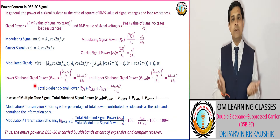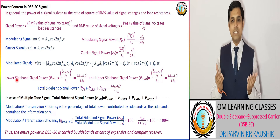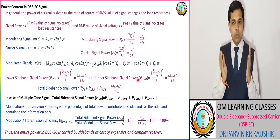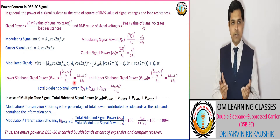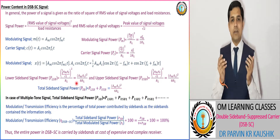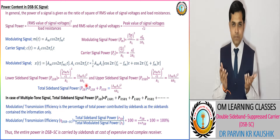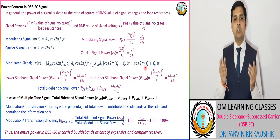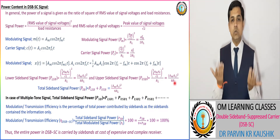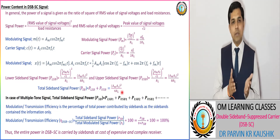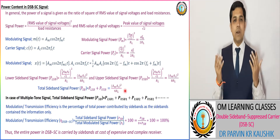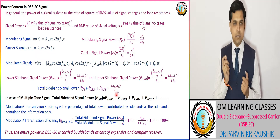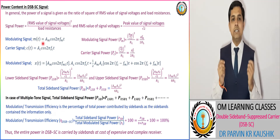For the upper and lower sidebands, we have the modulated upper sideband signal power and the modulated lower sideband signal power. The lower sideband signal power corresponds to the fc − fm operating frequency, and the upper sideband signal power corresponds to fc + fm. The total sideband power is equivalent to upper sideband power plus lower sideband power, which equals (Am·Ac)²/(4Rm). This total sideband power corresponds to a single-tone signal.